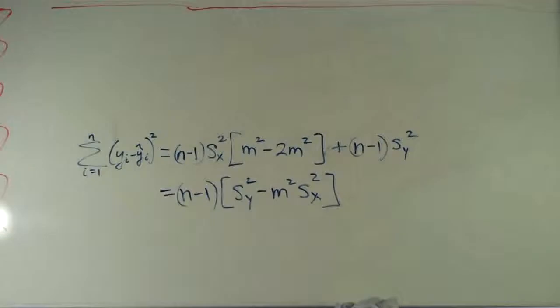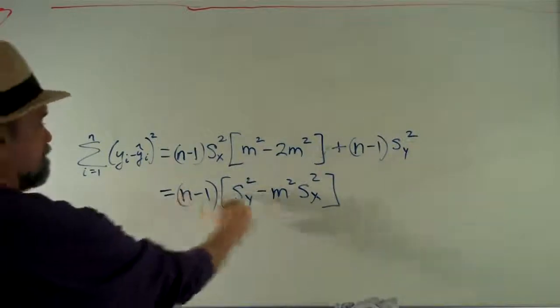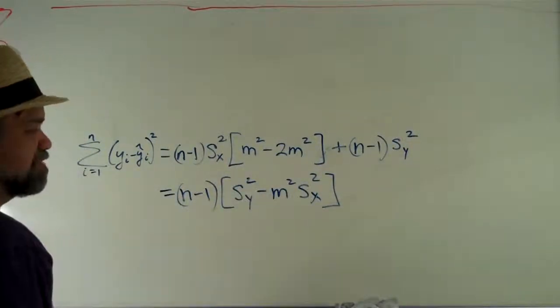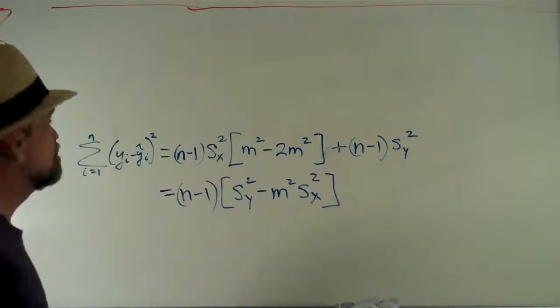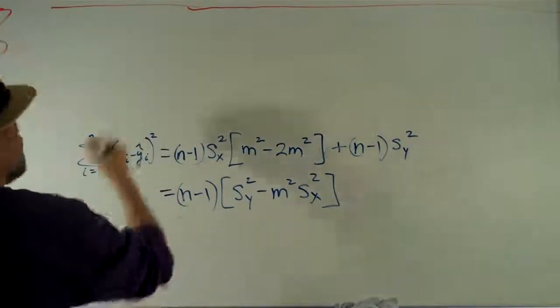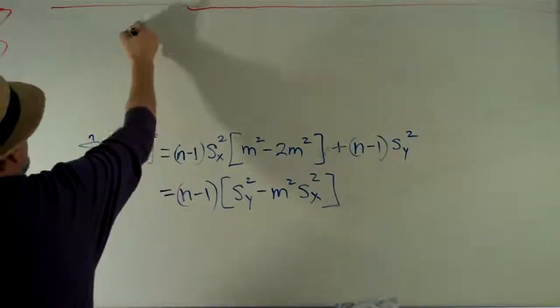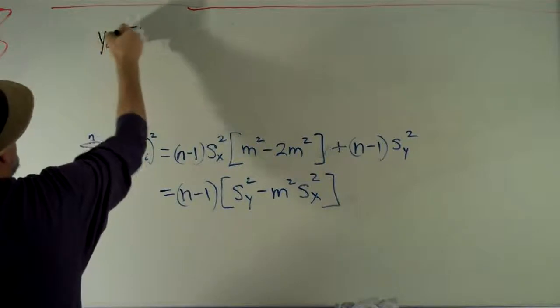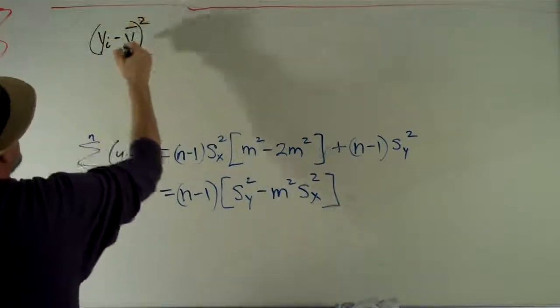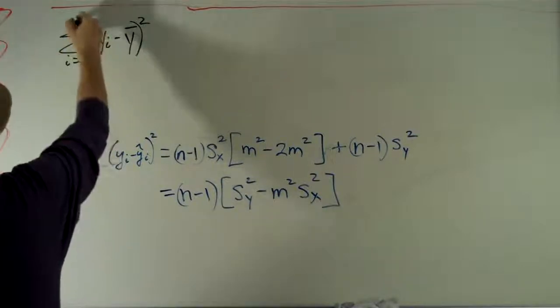So one thing we need to ask ourselves is, how much did the least-squared regression line help us? And the way that we've been measuring how good the least-squared regression line is, is by looking at the sum of squared residuals. We want to make that sum of squared residuals as small as possible. And if we remember at the beginning, the sum of our squared residuals was, the best guess we had for y was y-hat, right? So that means our residual would have been yi minus y-hat. When you square it, it's that. And when you sum them all up, it's that.